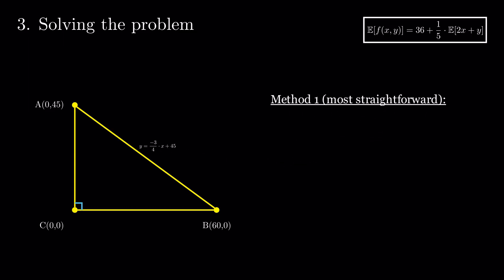First, let's start with the most straightforward approach. The expected value is given by the formula on the screen. Note that x ranges between 0 and 60, while y is bounded within 0 and the value given by the a, b line.